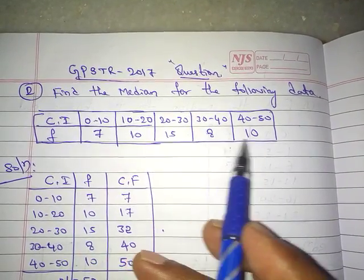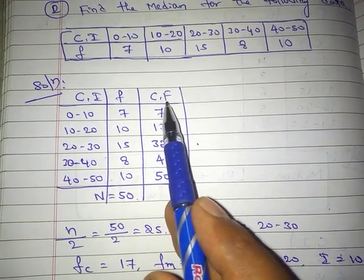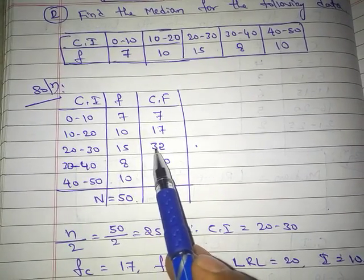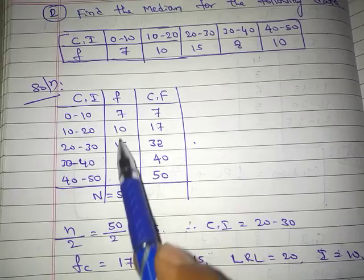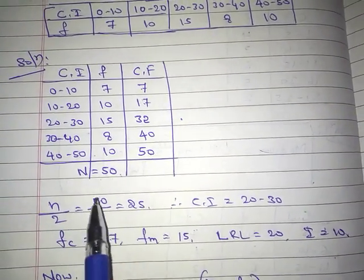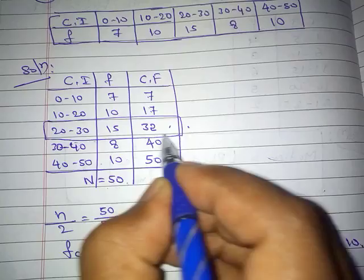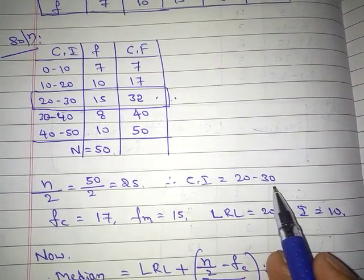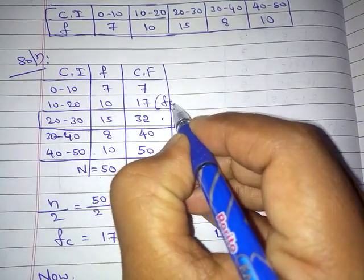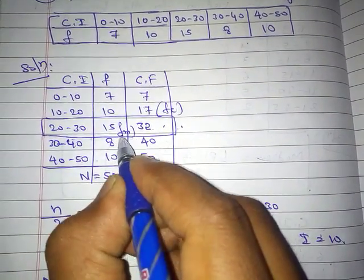The frequencies are 7, 10, 15, 8, and 10. Writing the table with class interval, frequency, and cumulative frequency: 7, then 7 + 10 = 17, 17 + 15 = 32, 32 + 8 = 40, 40 + 10 = 50. The sum of frequencies equals the last cumulative frequency, 50. Then n/2 = 25. The value 25 lies in the cumulative frequency of 32, so the median class is 20–30. The fc is 17 and fm is 15.